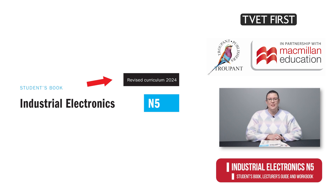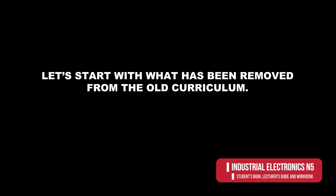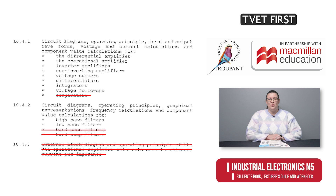But first, let's understand the new curriculum. Let's start with what has been removed from the old curriculum. In the new Module 3, comparators have been left out, as have the types of distortion.